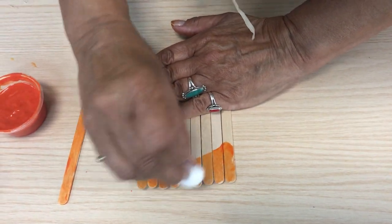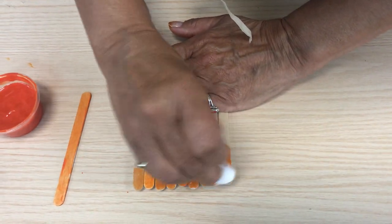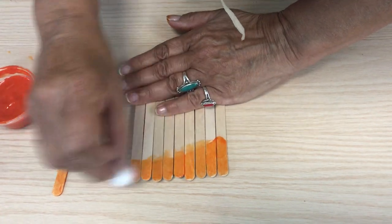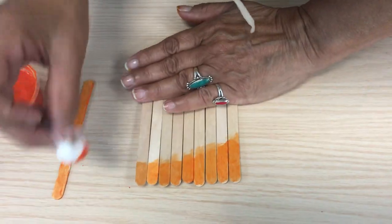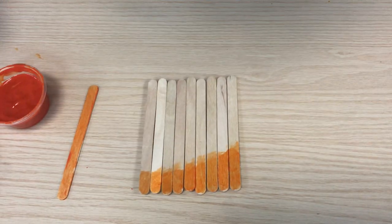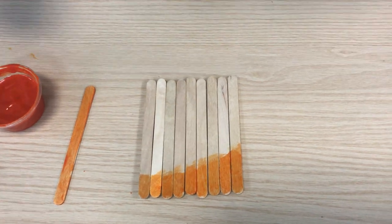Vamos a pintar la parte de arriba de los palos de madera y le pueden dar varias manos hasta que quede oscuro o del color que ustedes les guste.